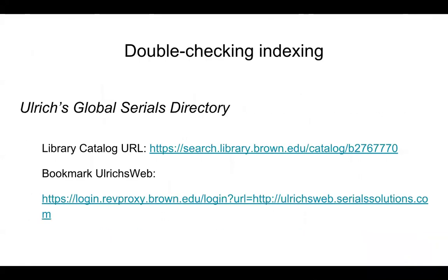A couple of closing notes. If you run across an article in a resource like Google Scholar and cannot find it through PubMed, you can check the indexing in a resource called Ulrichs. Ulrichs shows you where a journal is indexed and whether it is peer-reviewed. Ulrichs is available through the Brown University Library. We will not go into Ulrichs in this session any further, but do feel free to reach out to any Brown librarian with questions if you find yourself wanting to use Ulrichs.